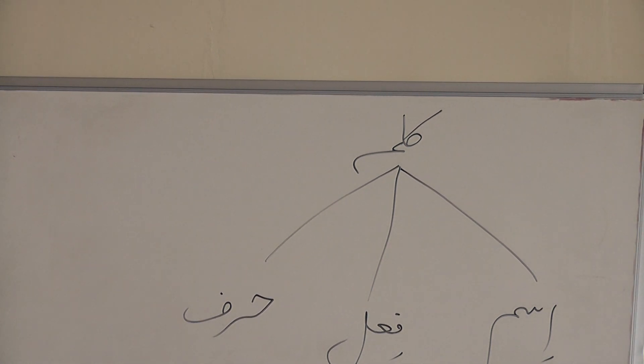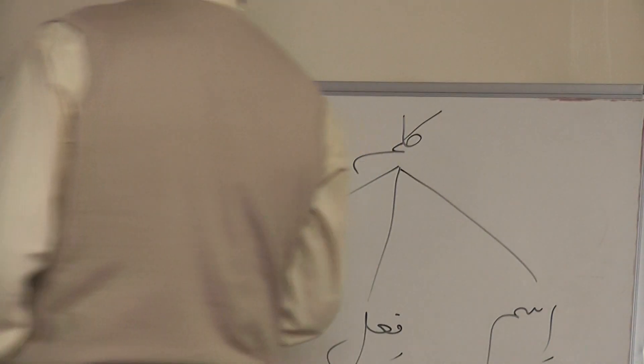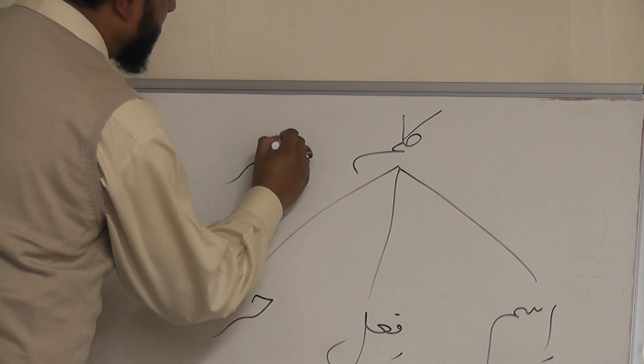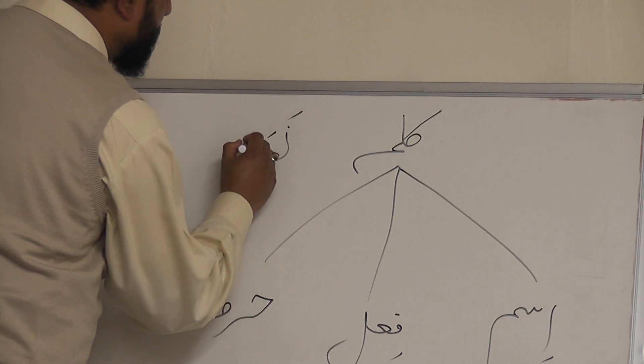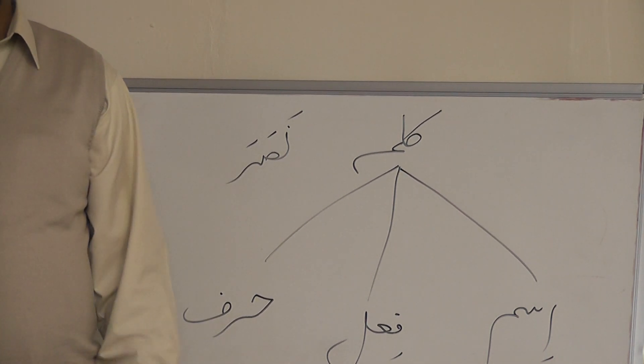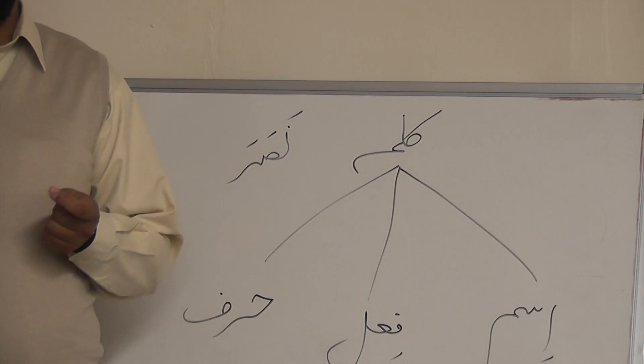Number two is verb. Verb is called FAIL, and verb means that word which denotes an action and has a tense. For example, if we say NASARA, that's past tense. NASARA means he helped in the past.